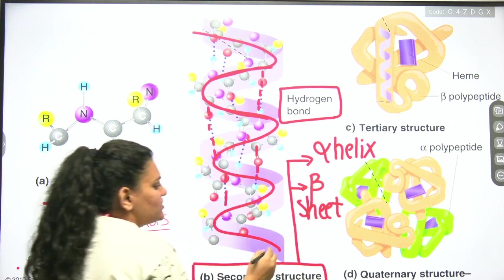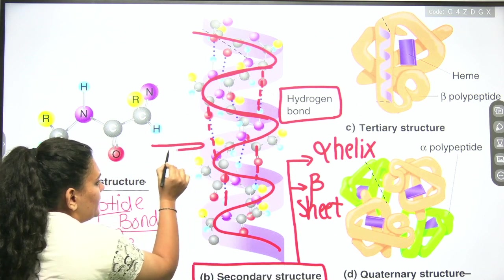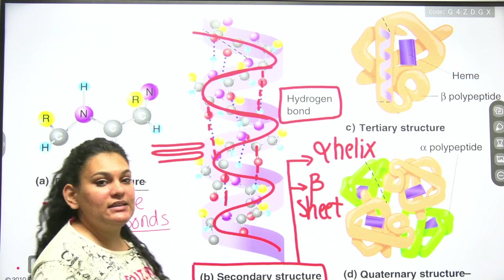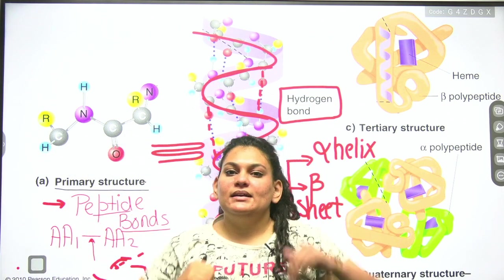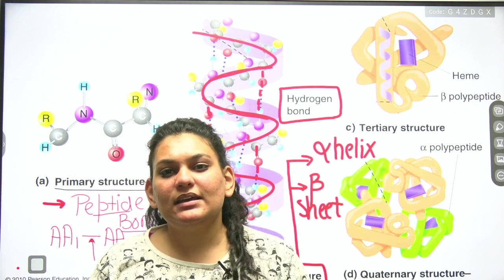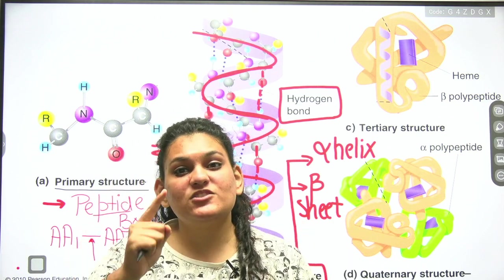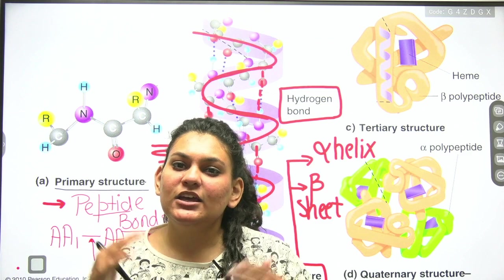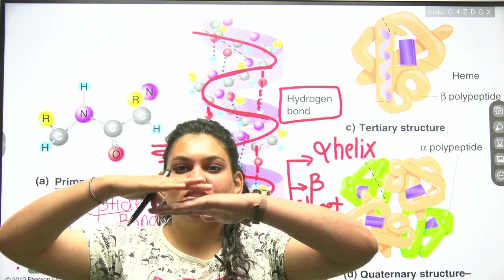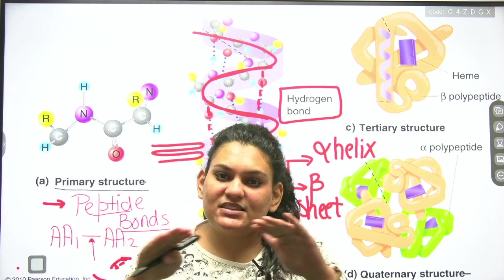The second form is the beta sheet structure — it is a sheet-like arrangement where the protein chain folds into flat plate-like sections. So there are two types of secondary structures: the alpha helix, which is coiled, and the beta sheet, which is arranged like plates.